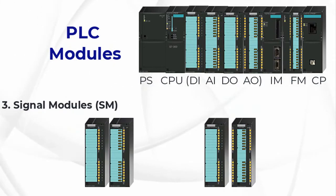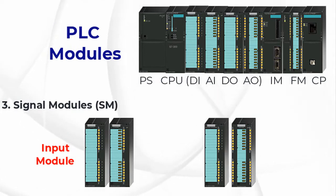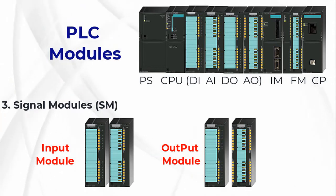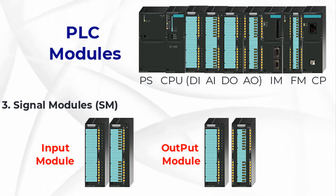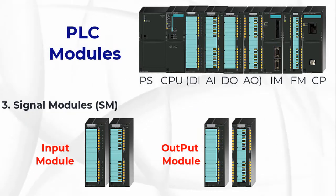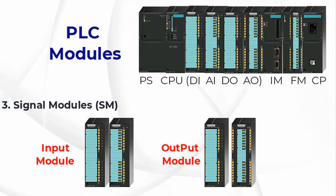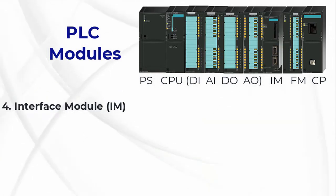3. Signal Module (SM), or Input-Output Module: The input-output modules are also called signal modules. They are connected to digital or analog field devices. Input field devices include switches, encoders, and transmitters, for example. Typical output field devices are relays, lamps, and proportional valves.